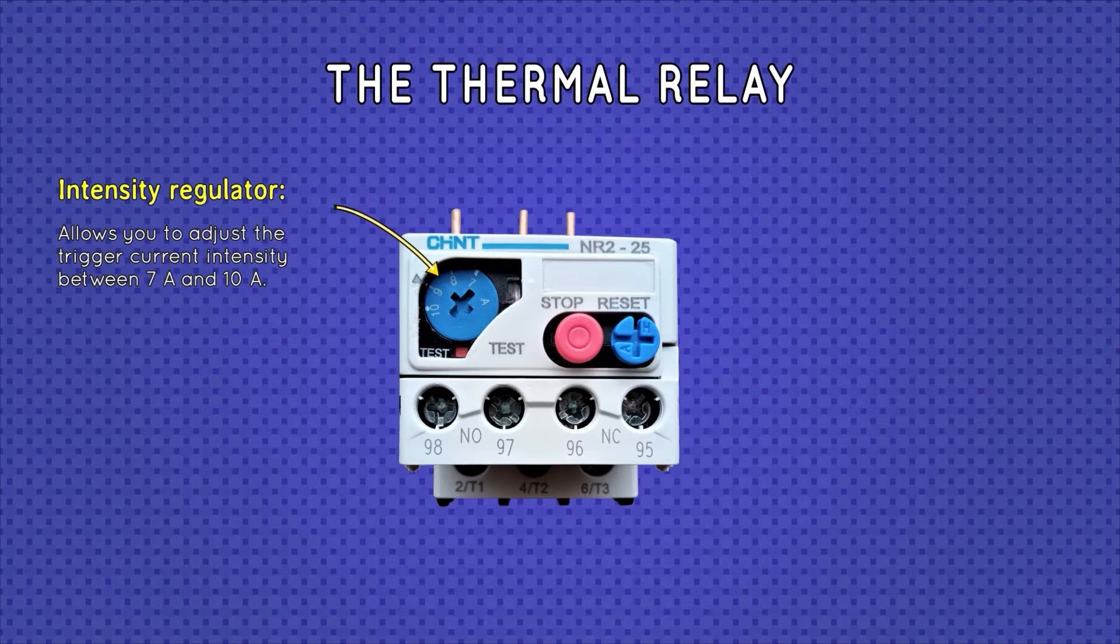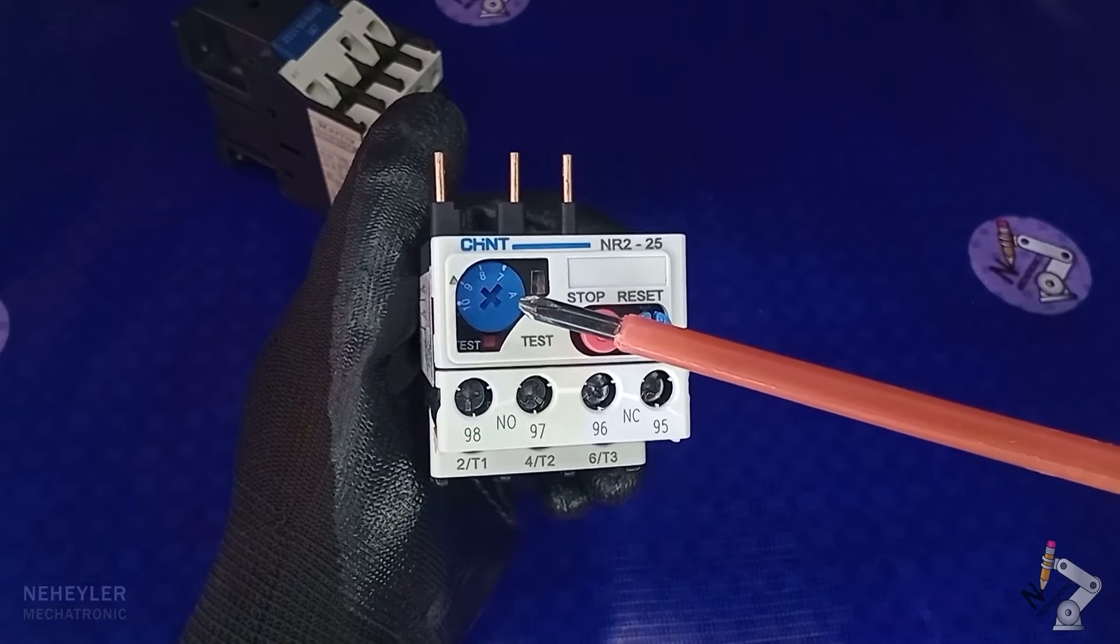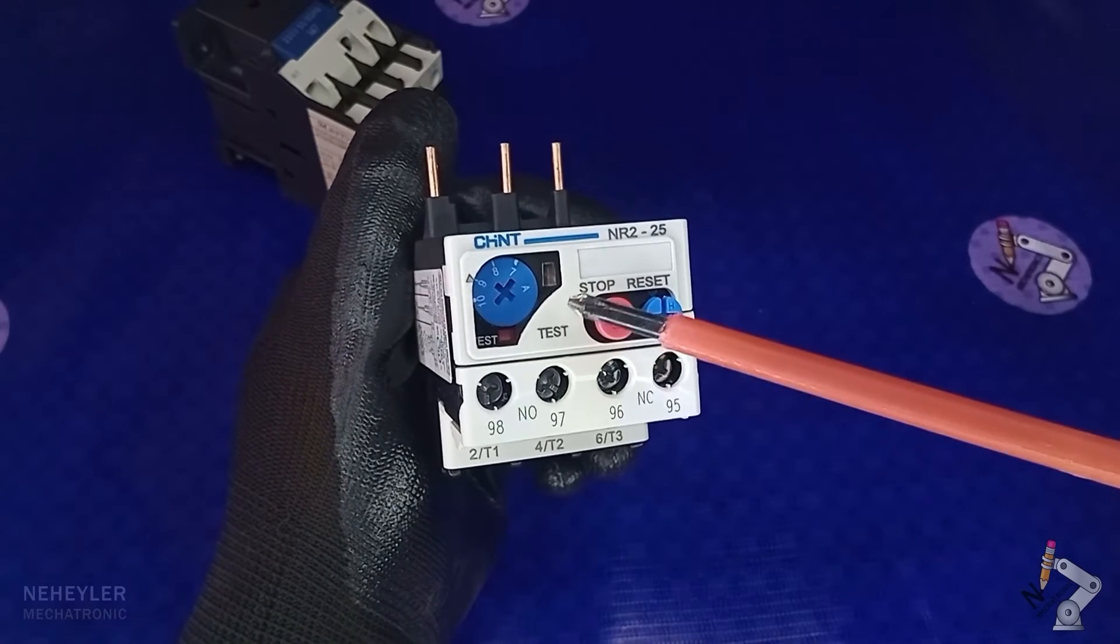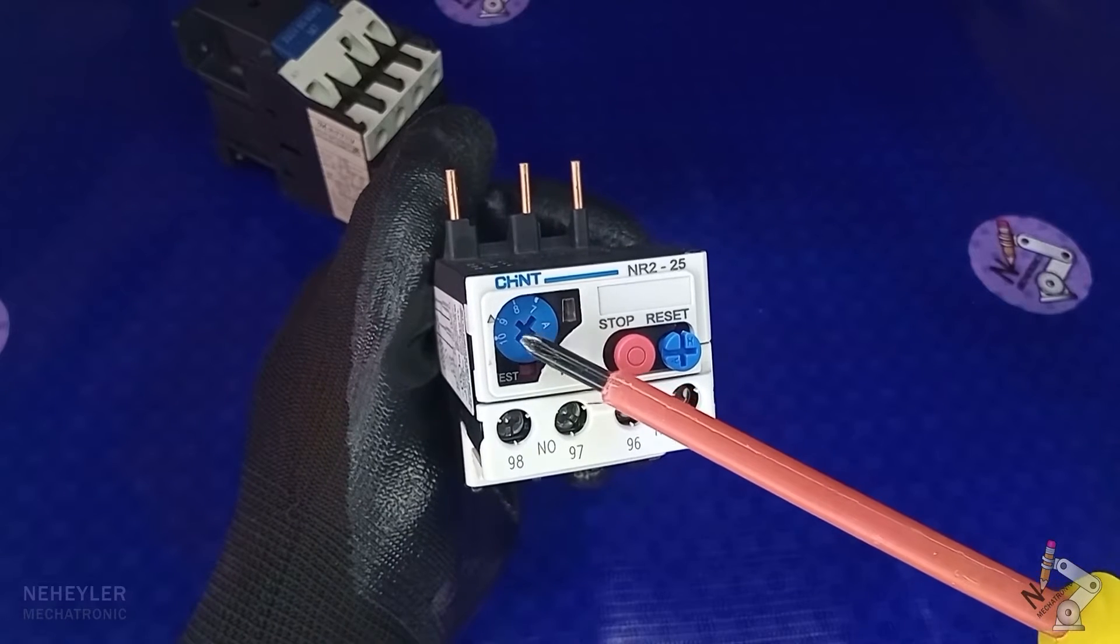On the front we have the following. The intensity regulator, which allows us to adjust the current intensity at which it will work. For this model I have, the intensity can be adjusted from 7 amps to 10 amps. In this position it has an arrow that indicates the intensity at which it is adjusted.